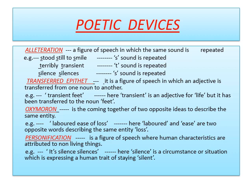The next poetic device is transferred epithet. This is a figure of speech in which an adjective is transferred from one noun to another noun. An example of transferred epithet can be seen in the phrase 'transient feet'. Here 'transient' is an adjective for life, but it has been transferred to the noun 'feet'.